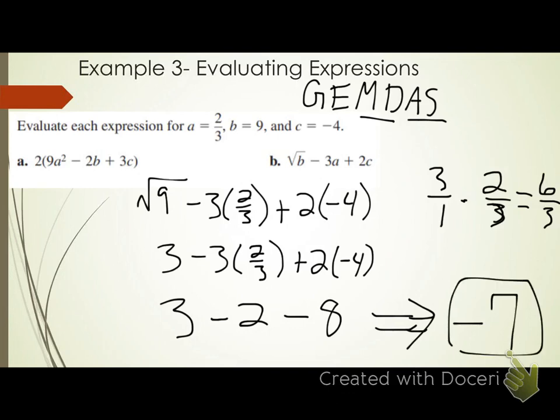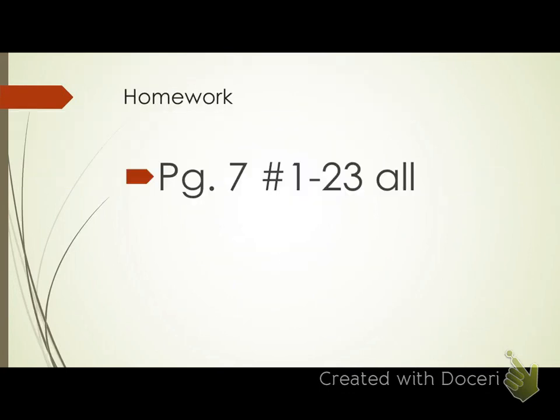Any questions over any of the problems we just covered? Same process every time: replace your variables with the numbers they equal, use your order of operations to work it out down to one number. Here's your first assignment: page 7, numbers 1 through 23.